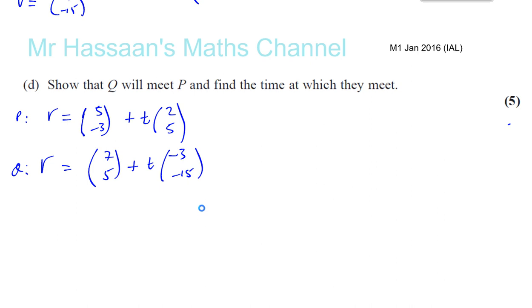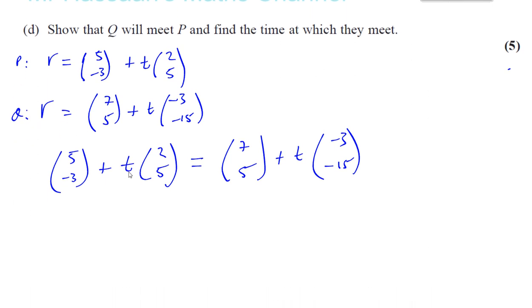Now, if they meet, then they will be at the same place at the same time. So the position vectors will be exactly the same for the same value of T. So what we have to do is basically make these two things equal to each other. If I can show that there's a value of T which will make these two things equal, that will be the time at which they both are at the same place at the same time.